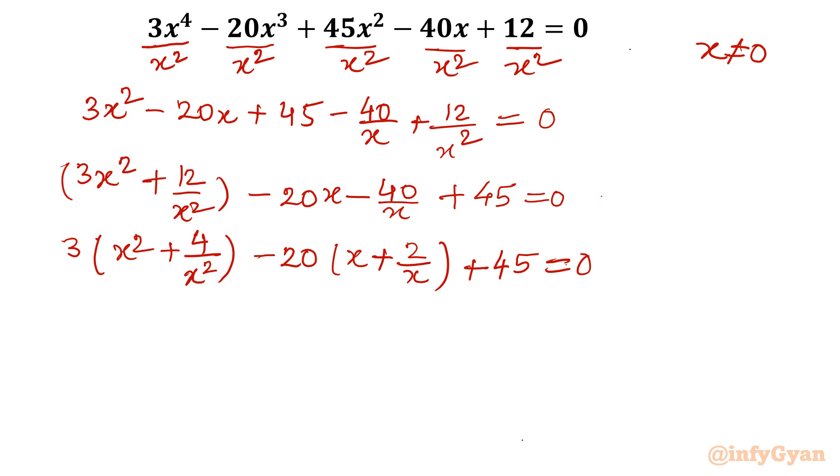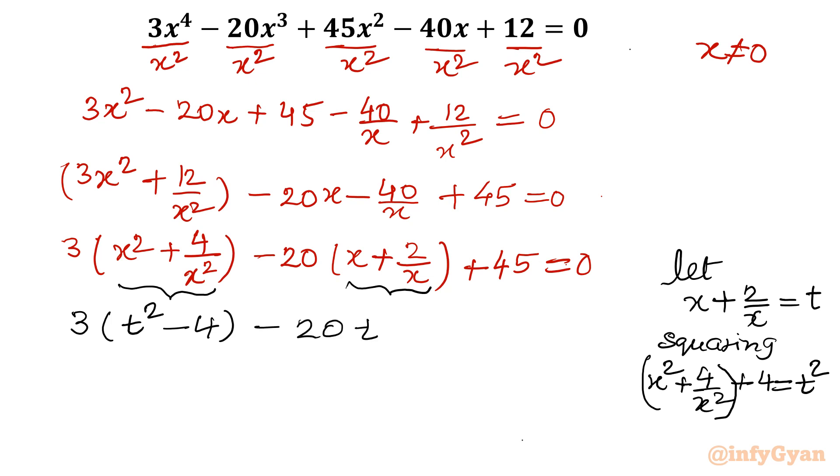Now substitution. I will give substitution. So what I am going to consider: let x plus 2 by x equal to t. Because of x square plus 4 over x square we have to convert. So squaring both sides, what I will be having is x square plus 4 over x square plus 2 times x times 2 over x, so 4 would be there equal to t square. That means x square plus 4 over x square would be t square minus 4. So I am going to put here 3 times t square minus 4 minus 20t plus 45 equal to 0.